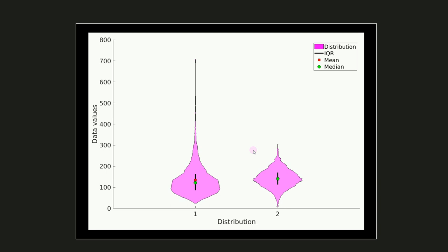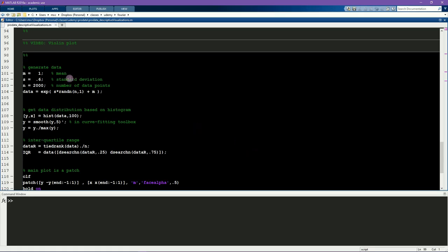Now let's look in MATLAB to see how violin plots are created. Here I'm generating a data distribution using something called a log normal distribution. This is a type of distribution that you'll learn about in the next section.